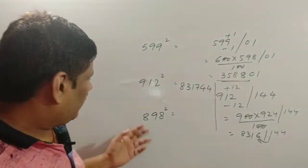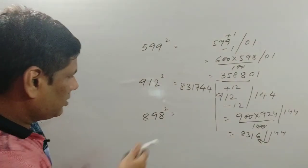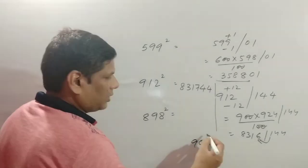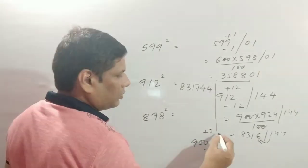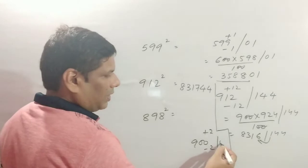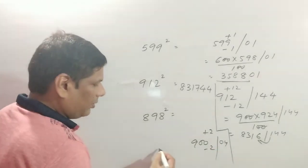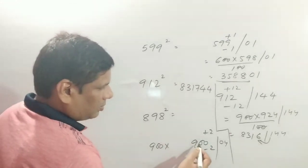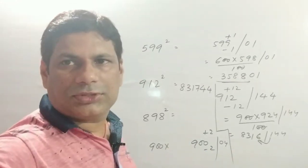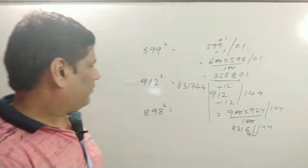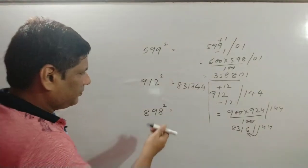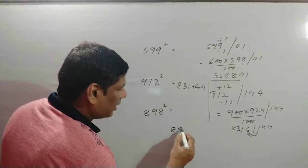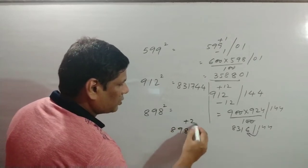Now let's find the square of 898. It's near 900. Write 898, then plus 2 and minus 2. 2 squared is 4. So we have 900 times 896 divided by 100, plus 04.